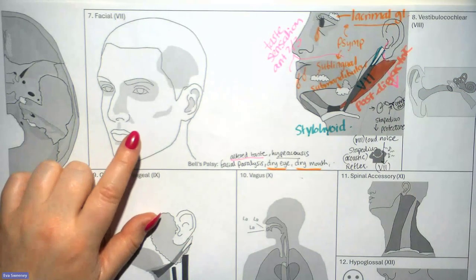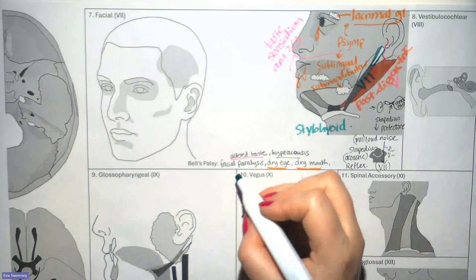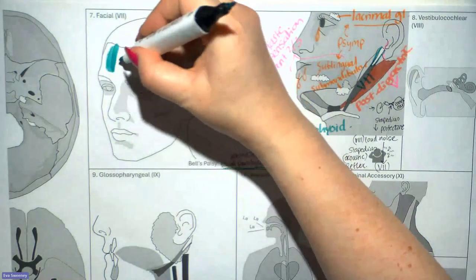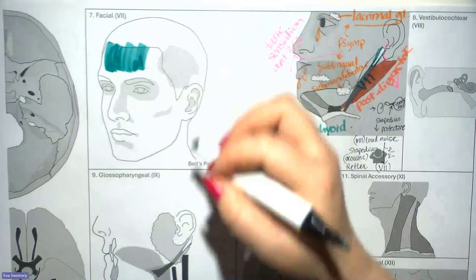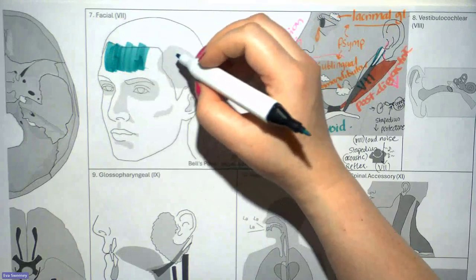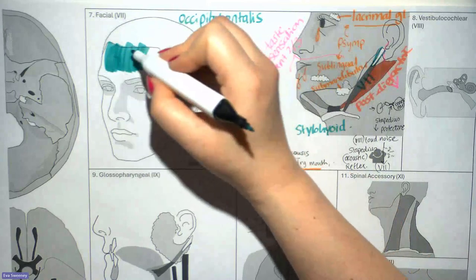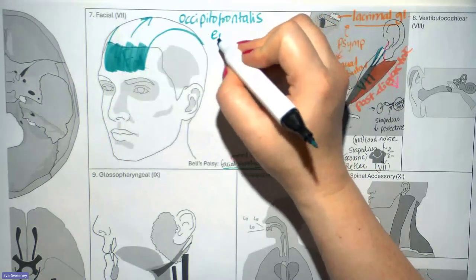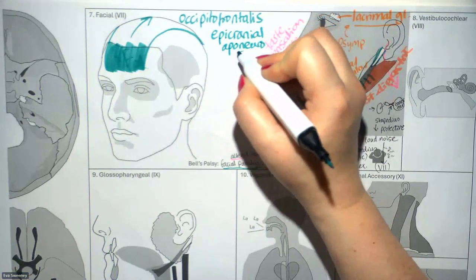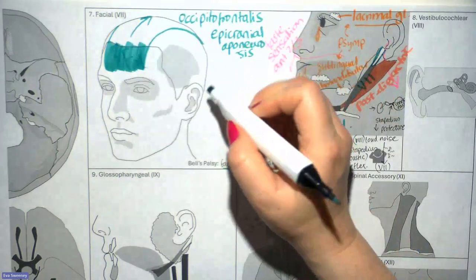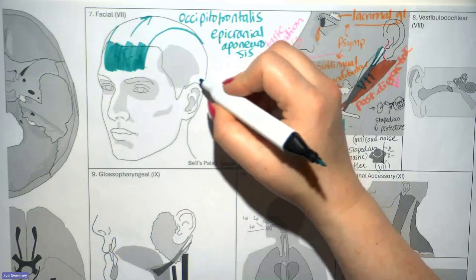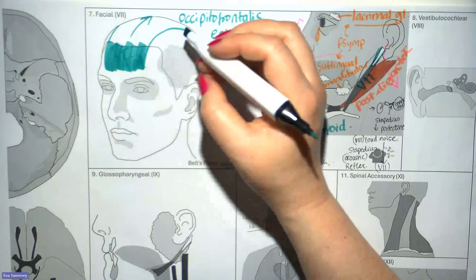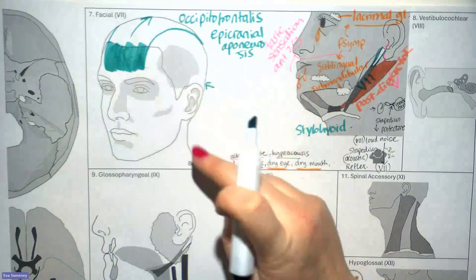The muscles of facial expression are a very important function of the facial nerve and the most easily recognisable symptom of Bell's palsy. The frontal belly of occipitofrontalis is commonly paralysed on purpose with Botox. It has a frontal belly in the forehead region, connected via the epicranial aponeurosis extending over the top of the head to the occipital belly. When the frontal belly contracts, it lifts the skin of the forehead, causing transverse forehead wrinkles and raising of the eyebrows.